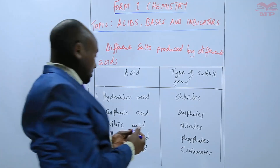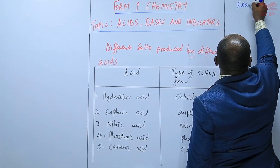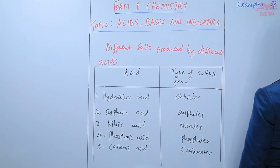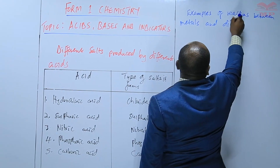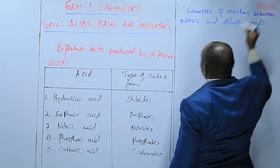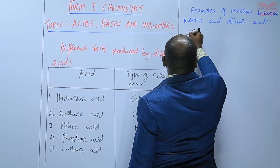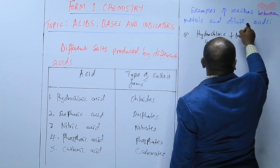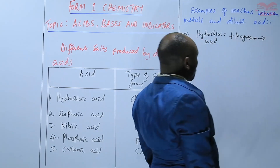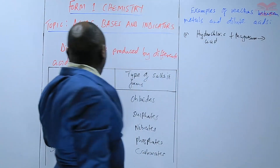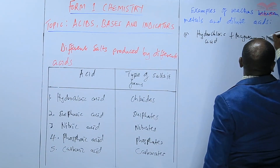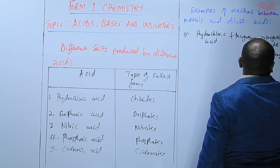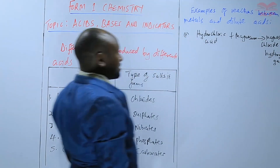We will take a few examples of reactions between metals and dilute acids. Using hydrochloric acid plus magnesium, we will get magnesium chloride — because from hydrochloric acid we get chlorides — plus hydrogen gas. Hydrogen gas must always be produced as long as we have a metal and an acid.